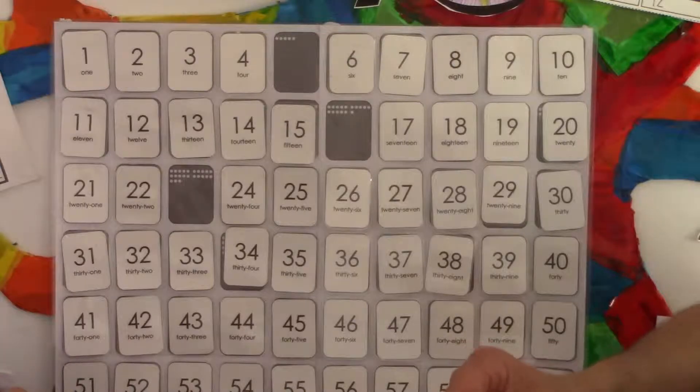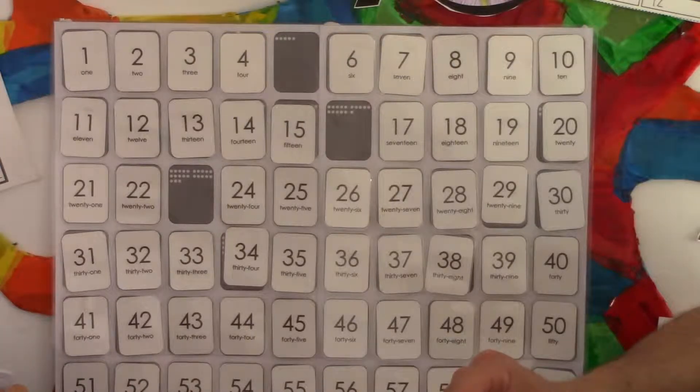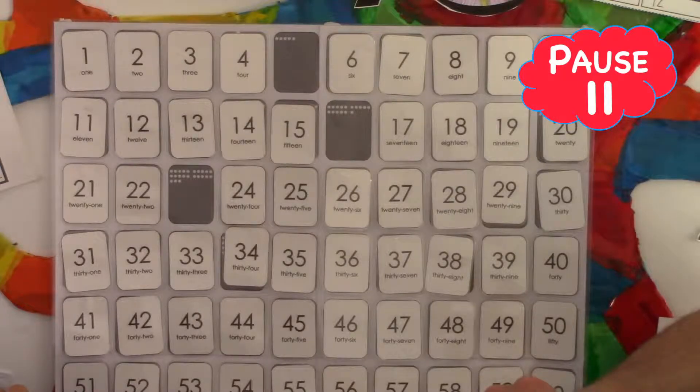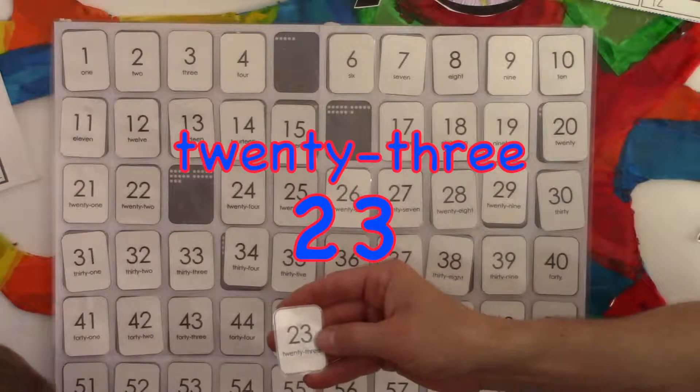This next number has two tens and a three in it. Twenty-three. Twenty-three.